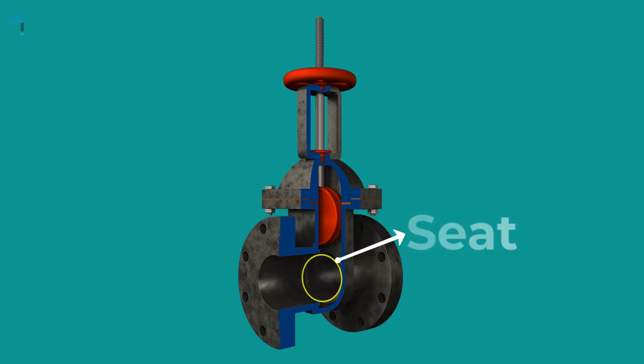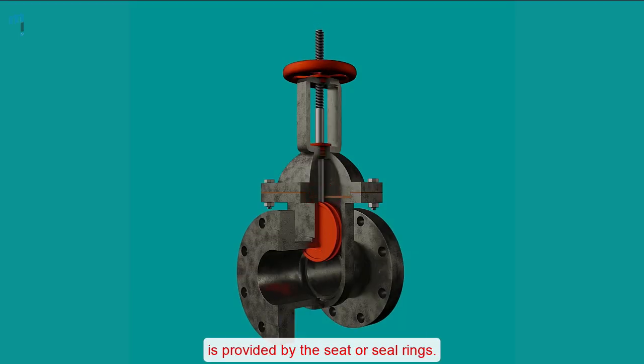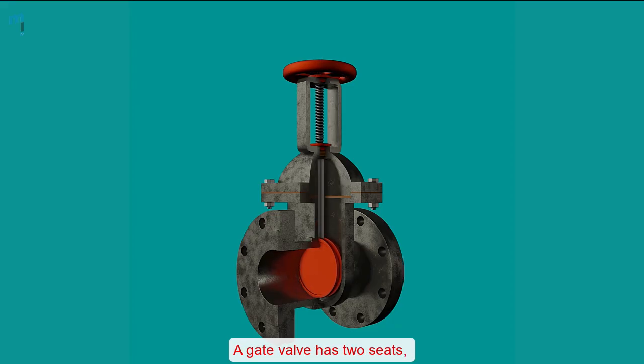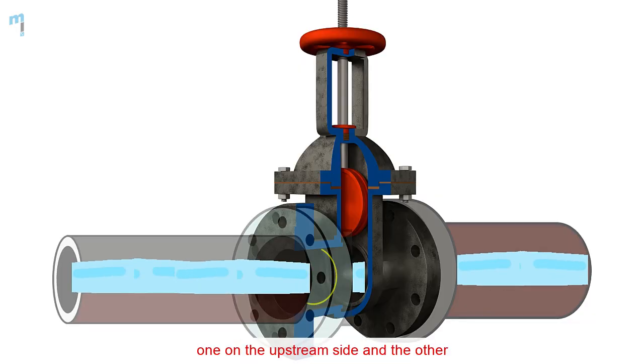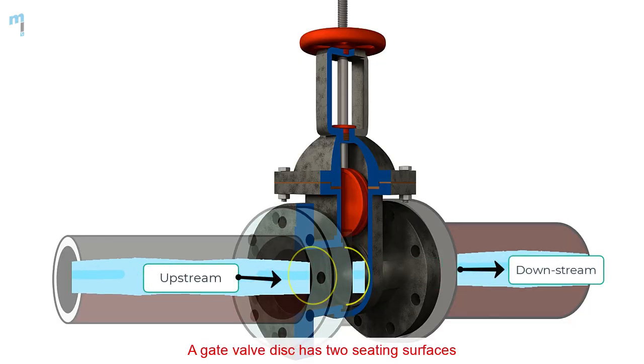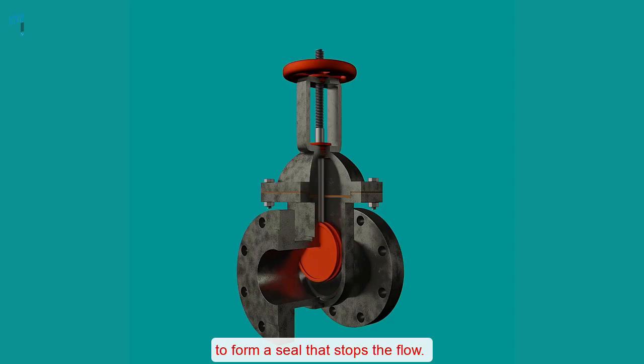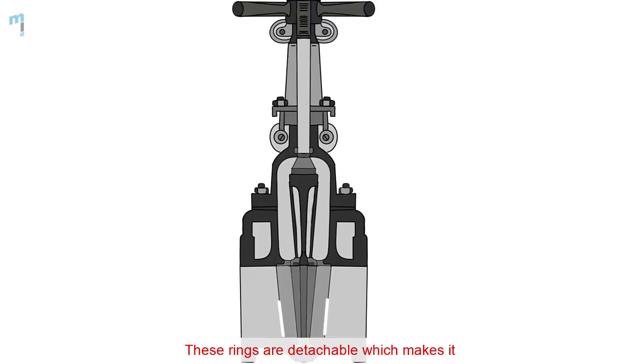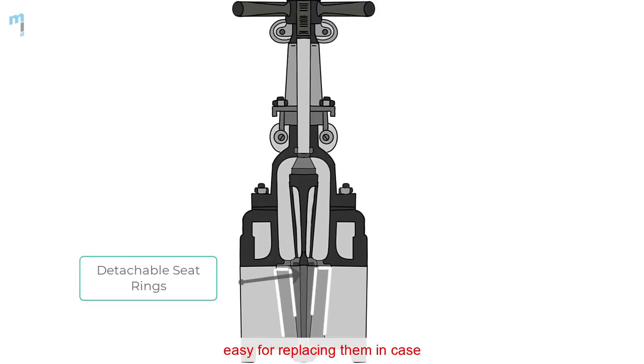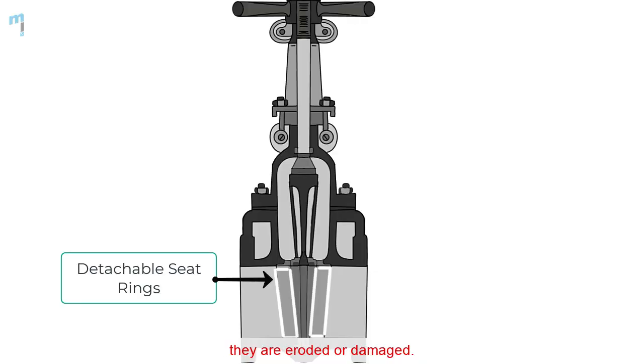Valve seat: The seating surface for the disc is provided by the seat or seal rings. A gate valve has two seats, one on the upstream side and the other on the downstream side. A gate valve disc has two seating surfaces that make contact with the valve seats to form a seal that stops the flow. These rings are detachable which makes it easy for replacing them in case they are eroded or damaged.